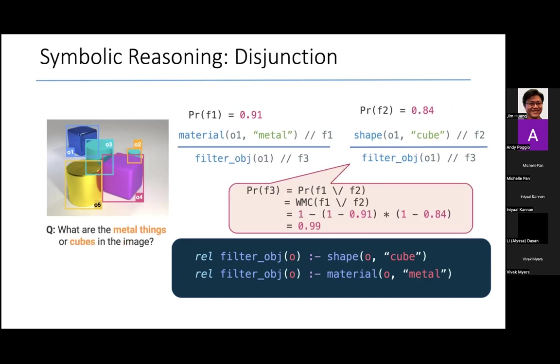Let me do another quick example of disjunction. Here I'm showing you how to compute the probability that the object O1 is either metallic or shaped as a cube. In this case, if you do the calculation, it comes to 0.99.